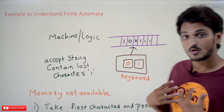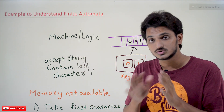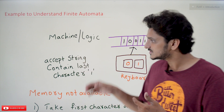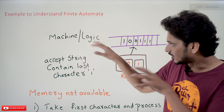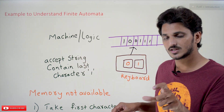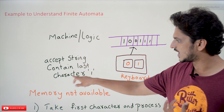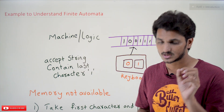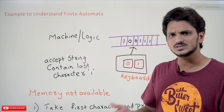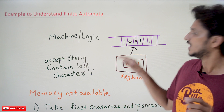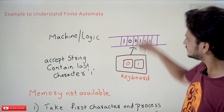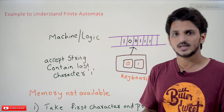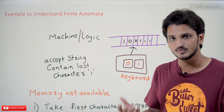Now we have to construct a logic — we will use the terms 'logic' and 'machine' interchangeably. The logic has to accept strings whose last character is 1. If our string contains last character 1, accept it; otherwise don't accept it. This is the logic we have to construct. Since we have RAM, the input is already saved. We move to the last memory location, check the character, and if it is 1, we accept the string.